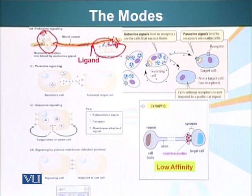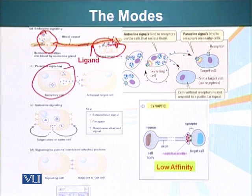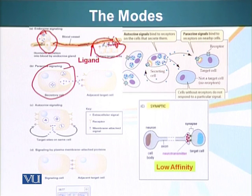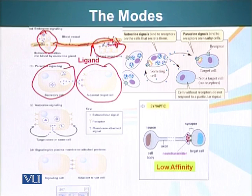There's paracrine signaling, in which a cell secretes a ligand and a cell in the near vicinity — not an adjacent cell, but somewhere nearby — is going to receive the signal through diffusion. So here's a cell secreting this ligand, and the target cell in the close neighborhood will receive the signal and respond.